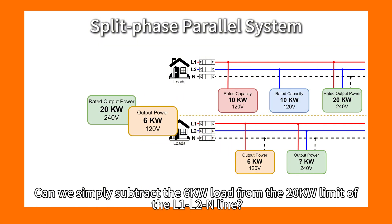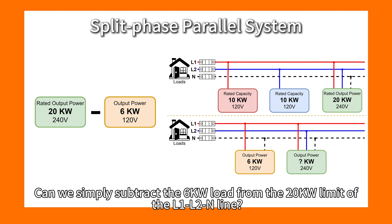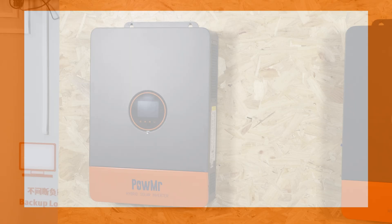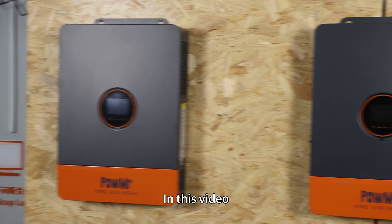Can we simply subtract the 6kW load from the 20kW limit of the L1-L2-N line? The answer is of course no.